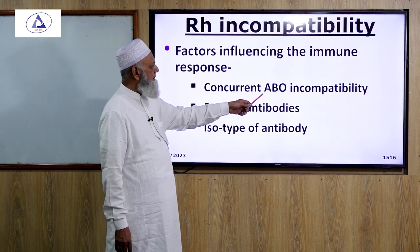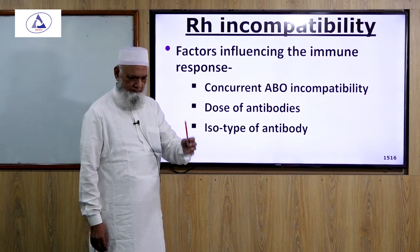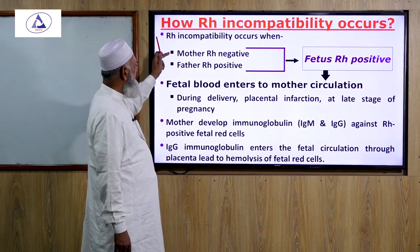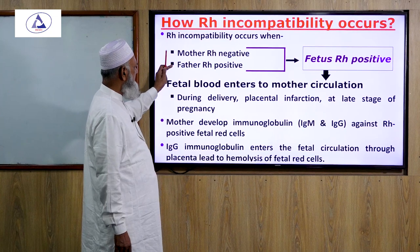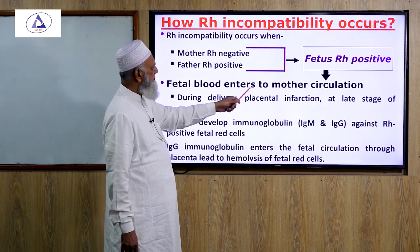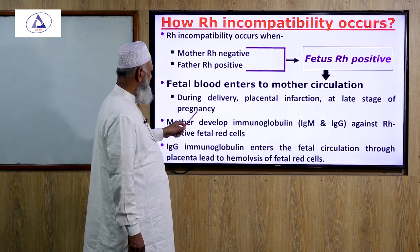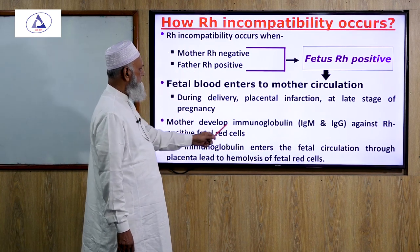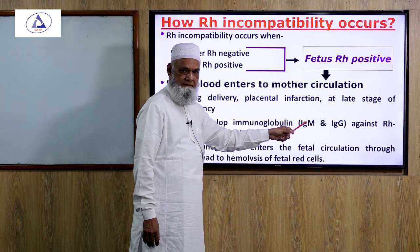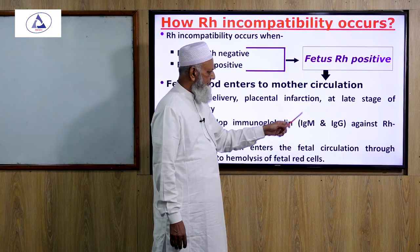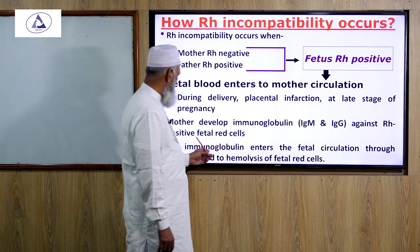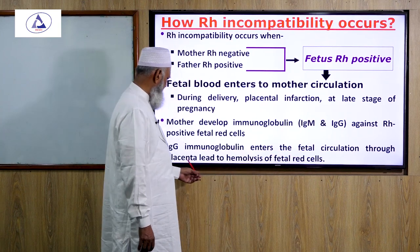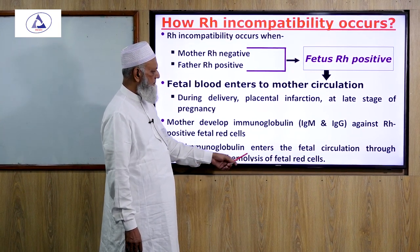How concurrent ABO incompatibility protects against hemolytic disease of the newborn will be discussed later. Rh incompatibility pathogenesis occurs when the mother is Rh negative, father is Rh positive, and fetus is Rh positive. Fetal blood cells enter the mother's circulation through the placenta. During delivery or placental infarction at late stage of pregnancy, the mother develops immunoglobulin IgM and IgG in a primary response, then a secondary response in subsequent pregnancies. IgG immunoglobulin against Rh positive fetal red cells enters the fetal circulation through the placenta, leading to hemolysis of the fetal red cells.